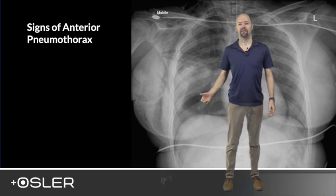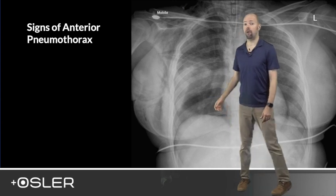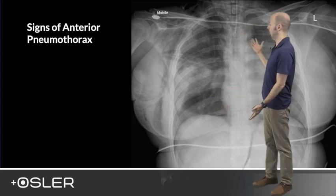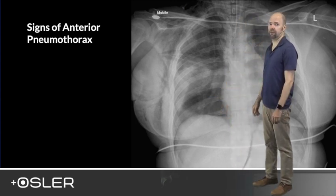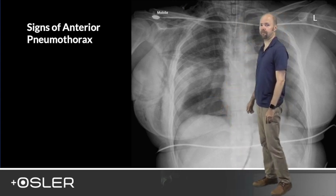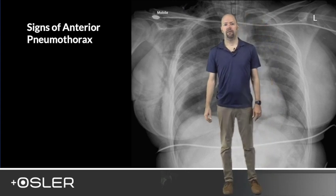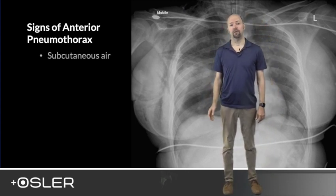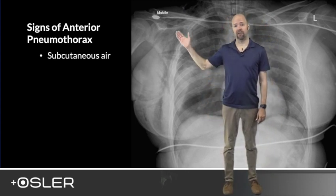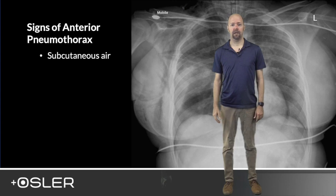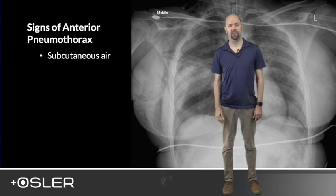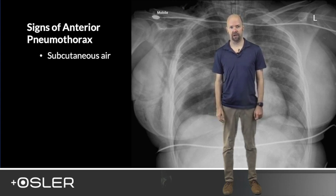Here's an example of a road trauma victim with bilateral anterior pneumothoraces. Firstly, look at the subcutaneous tissues for free air. In a patient with a closed chest injury, this usually represents a pneumothorax.